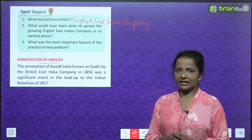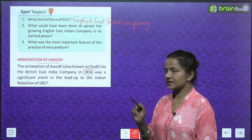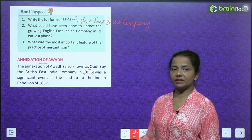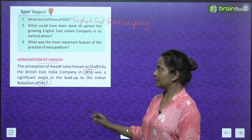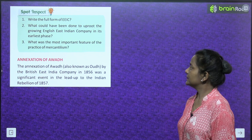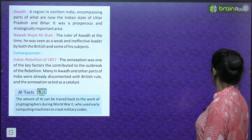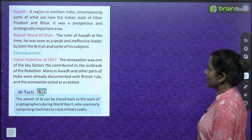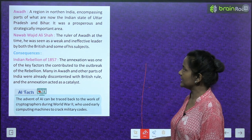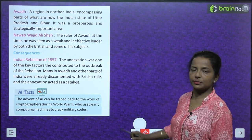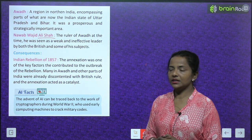Annexation of Awadh: The annexation of Awadh, also known as Oudh, by the British East India Company in 1856 was a significant event in the lead-up to the Indian Rebellion of 1857 — it was a main cause of that rebellion. Awadh was a region in northern India encompassing parts of present-day Uttar Pradesh and Bihar, and was a prosperous and strategically important area.